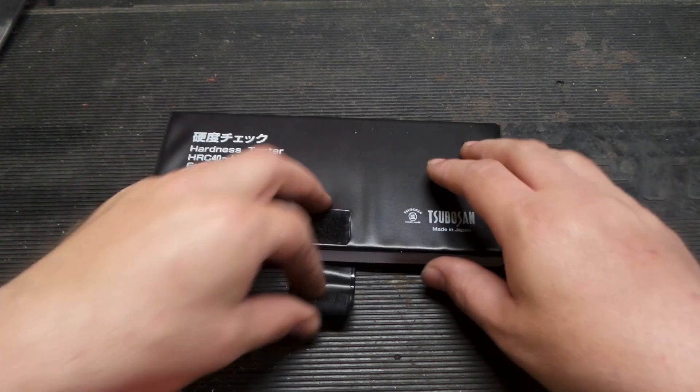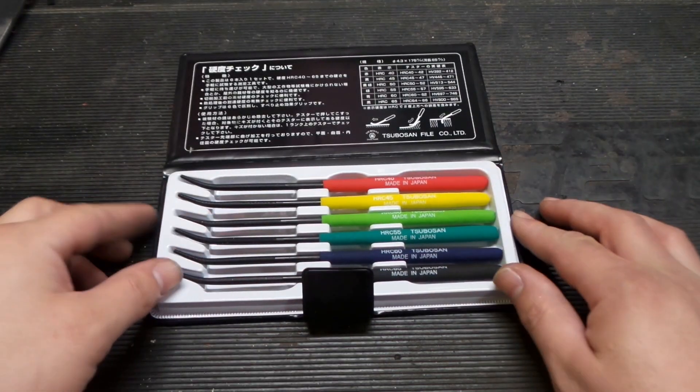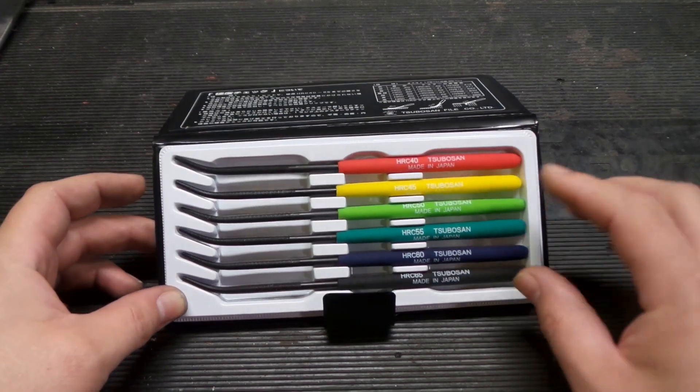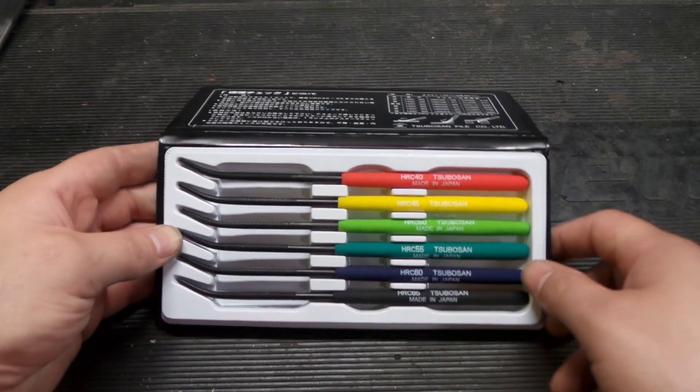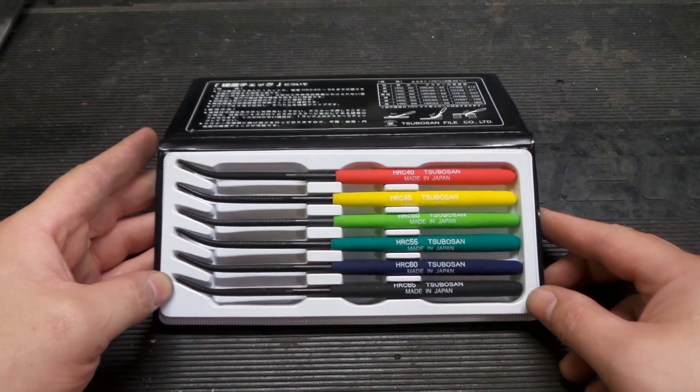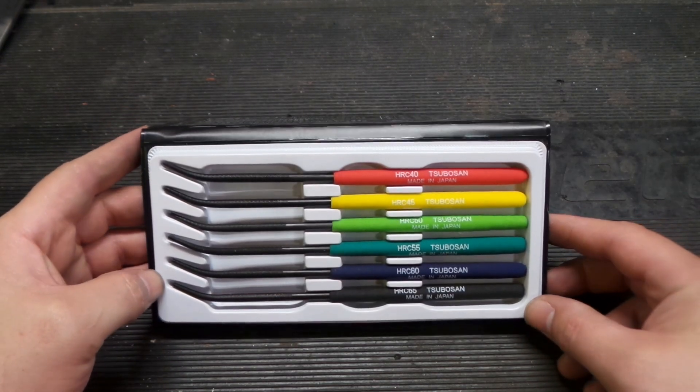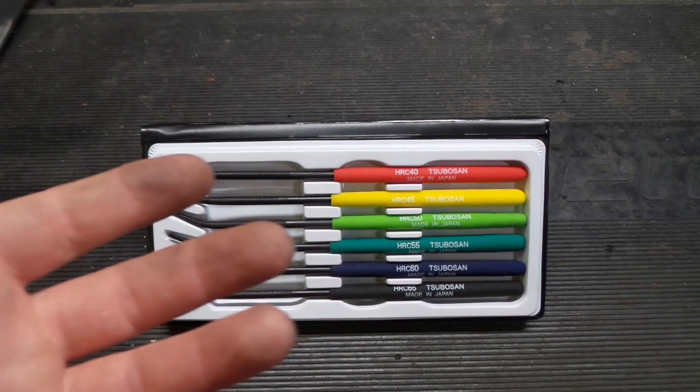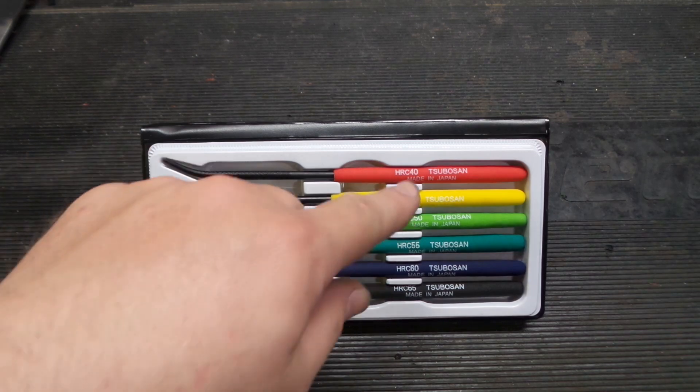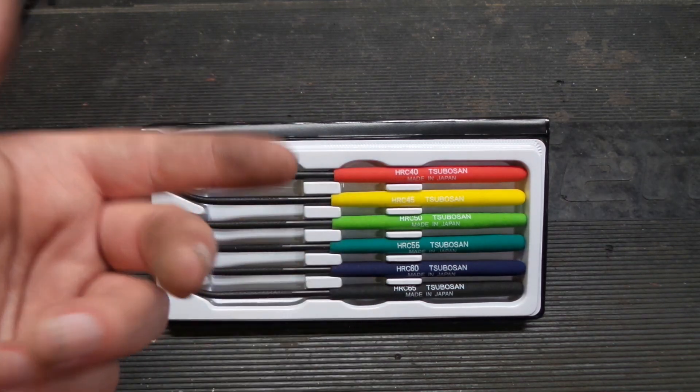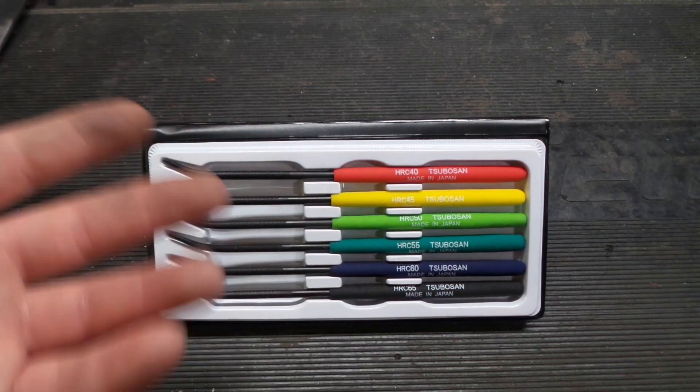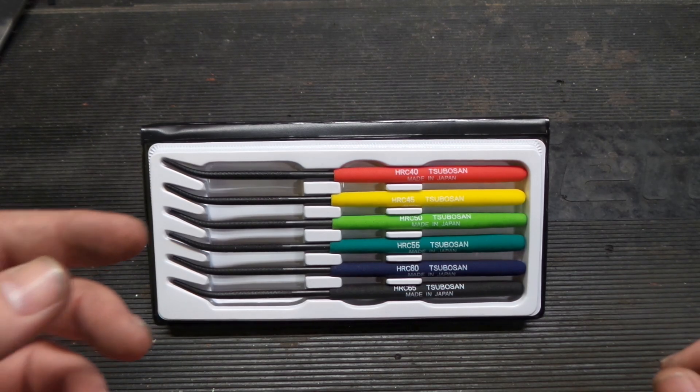So let's take a look at it. Really all it is is a bunch of files and the files work with Rockwell. Rockwell is a hardness gauge. I don't know why it's HRC, I believe it's Rockwell hardness something, I don't really know off the top of my head.